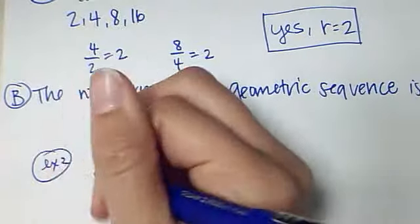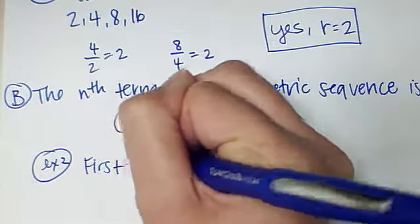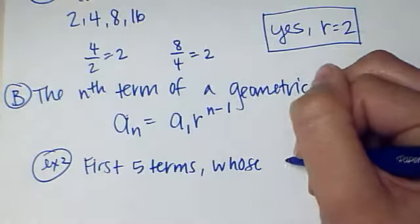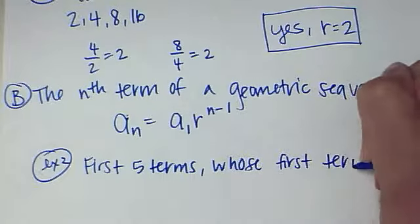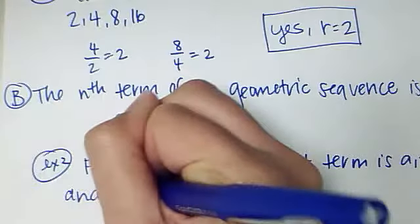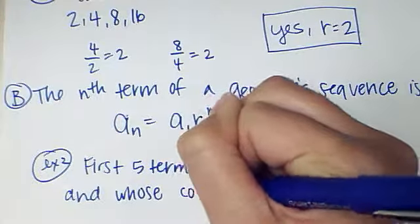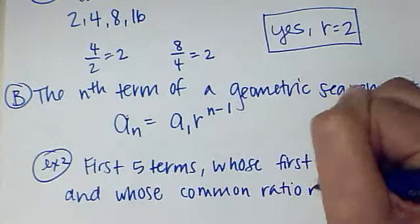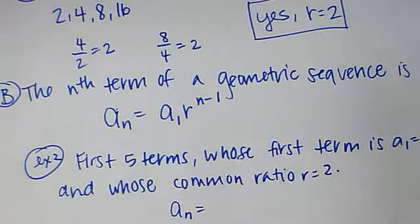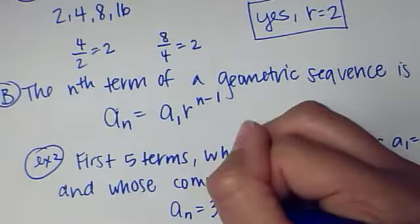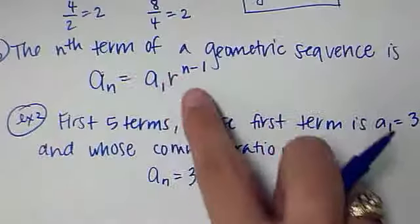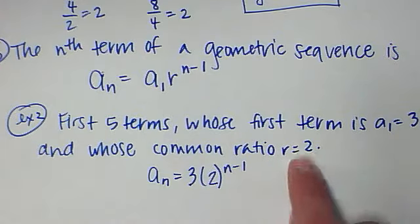Example number 2 for today. I want the first five terms whose first term is A sub 1, which equals 3, and whose common ratio R equals 2. So I have A sub n equals A1, which is 3, times R, which is 2, to the n minus 1. That's how I find out the beginning of my sequence. I know it's geometric because there's a common ratio.